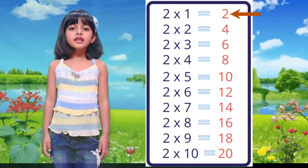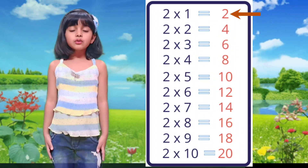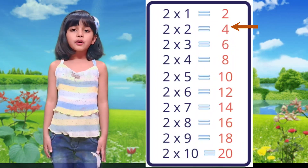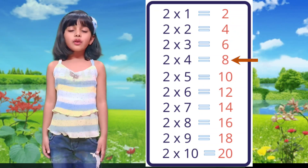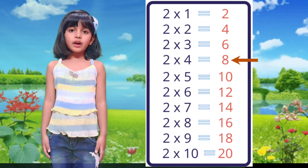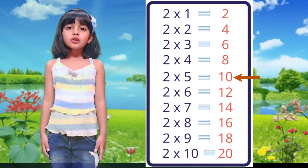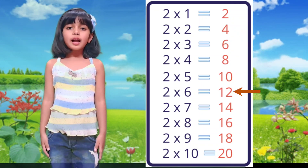Table of 2. 2×1 is 2, 2×2 is 4, 2×3 is 6, 2×4 is 8, 2×5 is 10, 2×6 is 12.